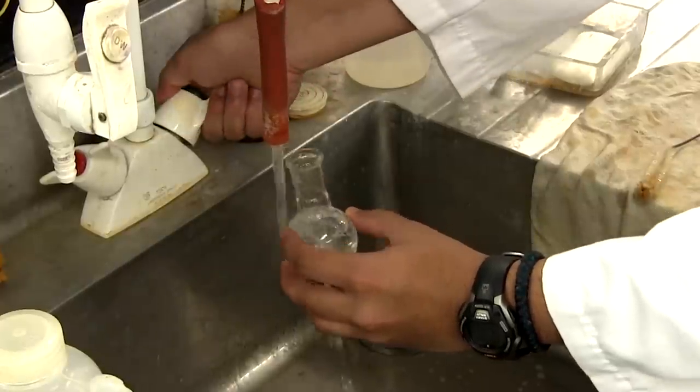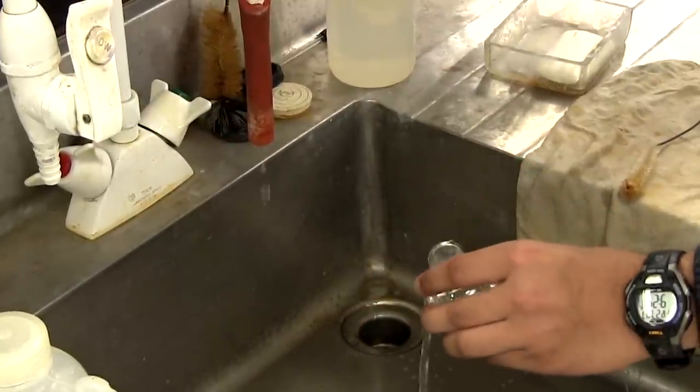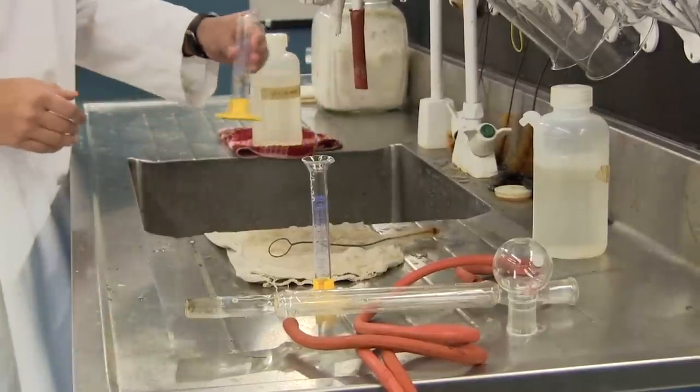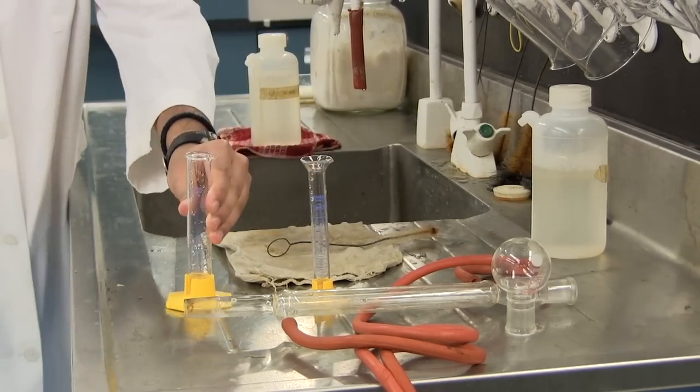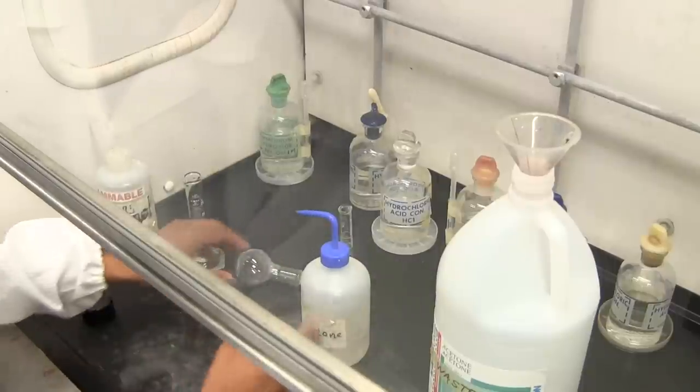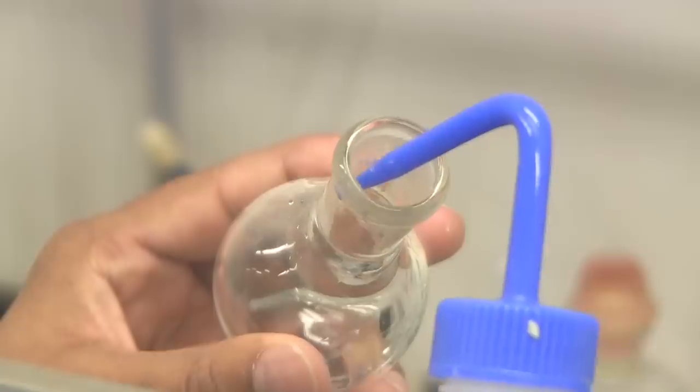Once all the glassware is collected, ensure that all glassware is properly cleaned before starting the experiment as the Grignard reaction is highly sensitive to impurities. It is recommended that you use a test tube brush when cleaning the glassware. Next, rinse all glassware with acetone after washing.